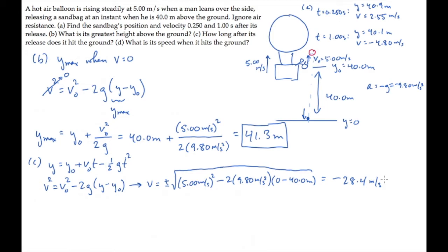Now we need to find the time when the sandbag has that velocity. And for that we use the time-dependent equation. Solve it for the time. It's the difference in the velocities, final minus initial divided by the acceleration minus g. Substitute numbers. To find that it equals 3.41 seconds. That's how long the sandbag is in flight.